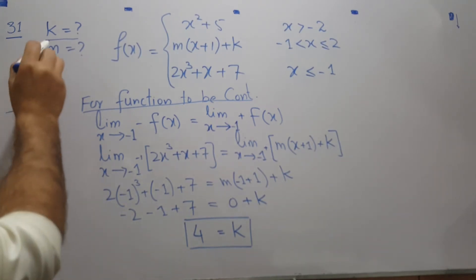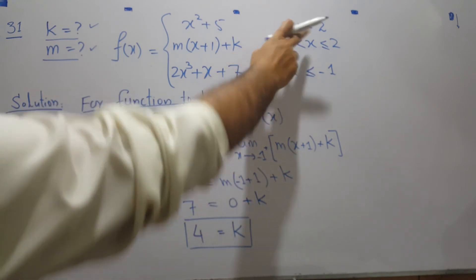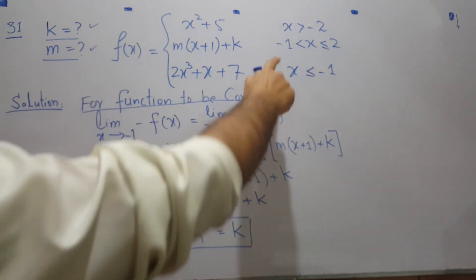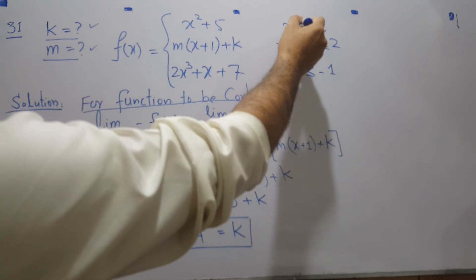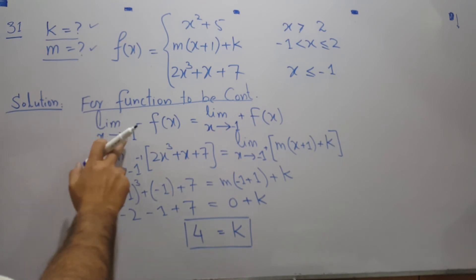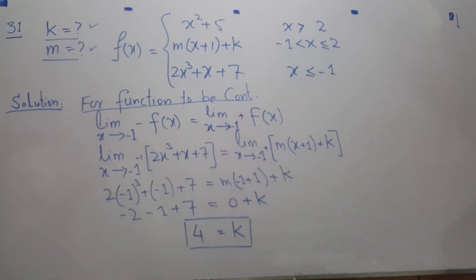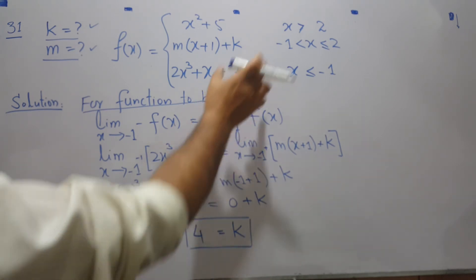In the next question we have to find the values of k and m for a piecewise function defined over regions x less than minus 2, x between minus 1 and 2, and x greater than or equal to those bounds. For the function to be continuous, the left hand limit and right hand limit must be equal. We can use either of the two boundary points: 2 or minus 1. Using minus 1, we take the limit as x approaches minus 1 from the left and from the right.